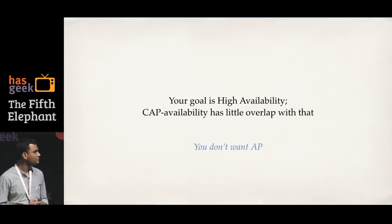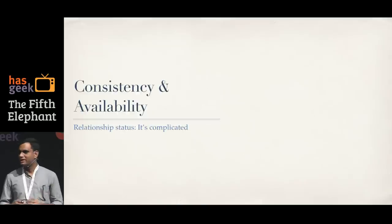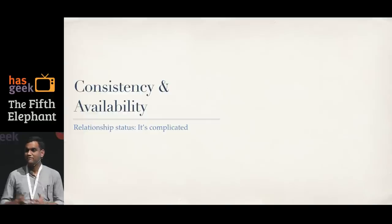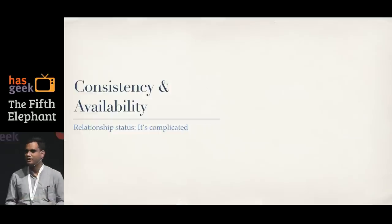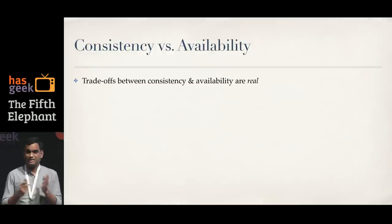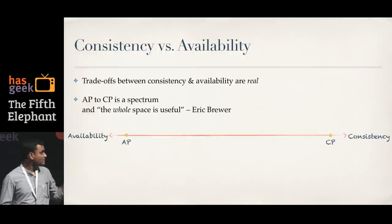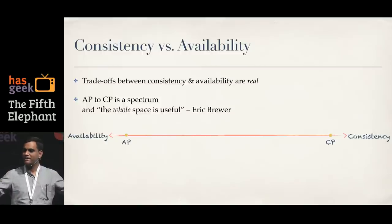Looking at all of this, I'm not saying consistency or availability is unimportant — they are both very important. But you need to understand what sort of consistency you need and what sort of availability you need. The trade-offs are very real. But CP and AP as CAP theorem defines them are just two points on a very large spectrum of consistency and availability.